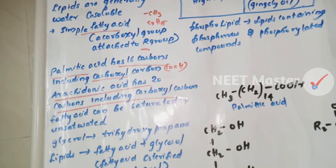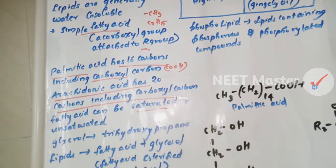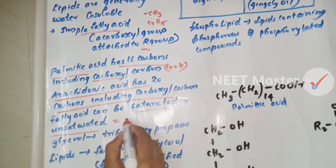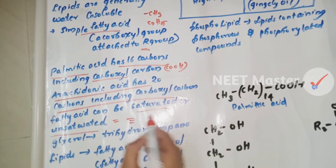Fatty acids can be saturated or unsaturated. Saturated means only single bonds — no double bond or triple bond. Unsaturated fatty acids contain double or triple bonds.